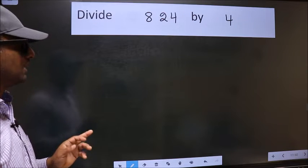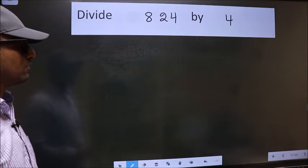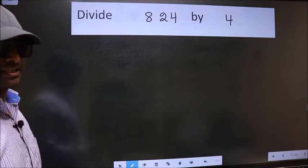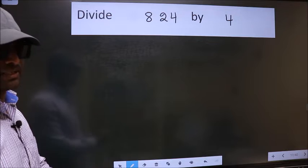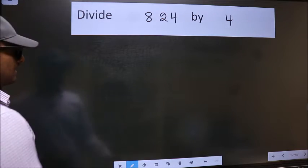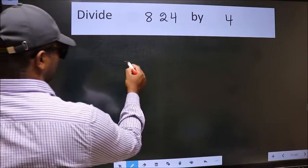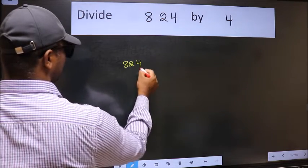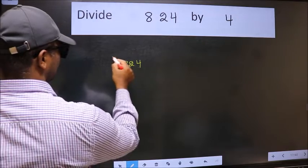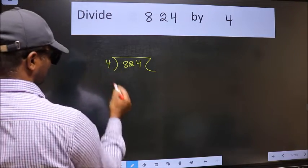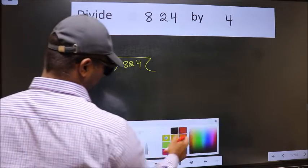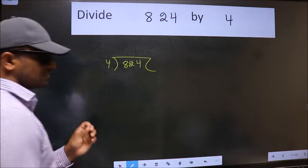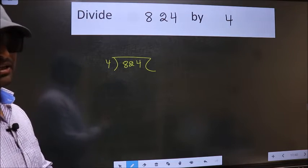Divide 824 by 4. To do this division, we should frame it in this way: 824 here and 4 here. This is your step 1.